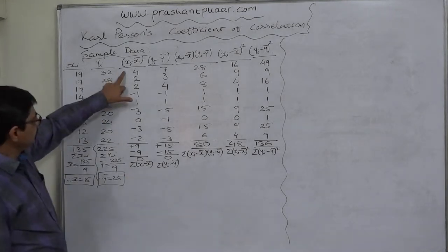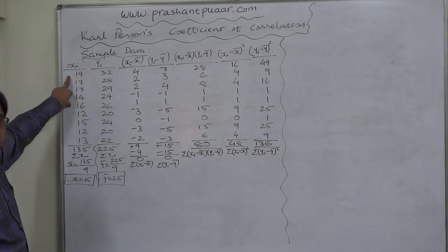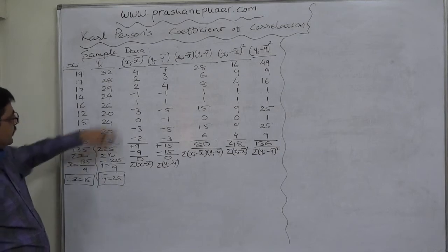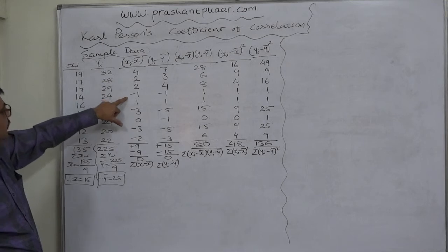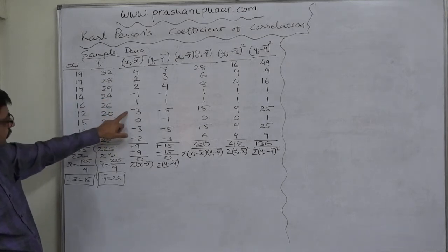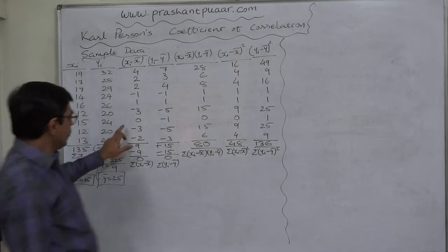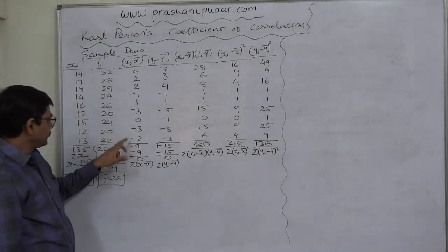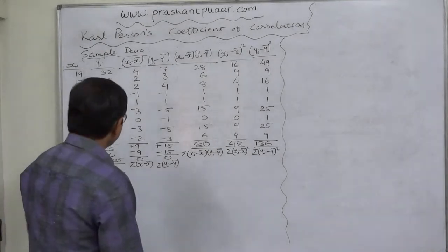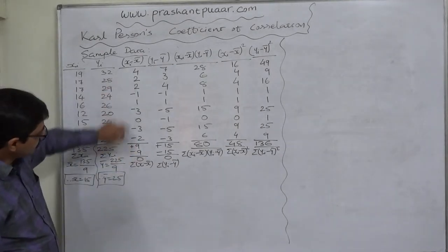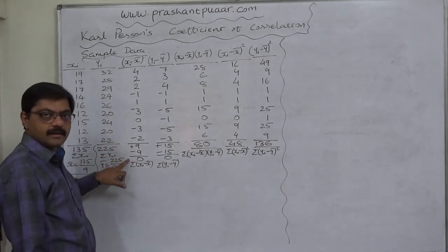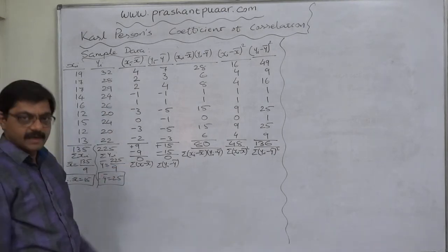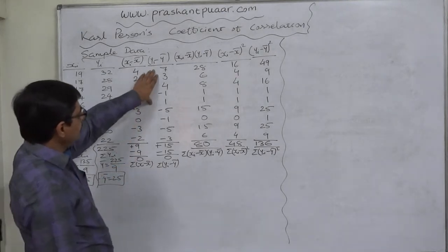The first step is to find X minus X-bar, meaning we subtract 15 from each value of X. That gives: 19−15=4, 17−15=2, 17−15=2, 14−15=−1, 16−15=1, 12−15=−3, 15−15=0, 12−15=−3, 13−15=−2. The positive deviations sum to +9 and negative deviations sum to −9, giving absolute zero, so this column is correct.